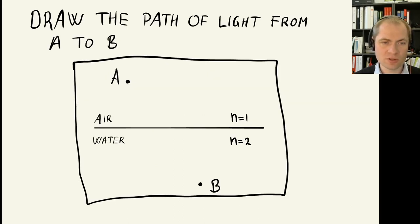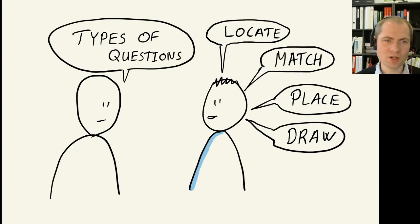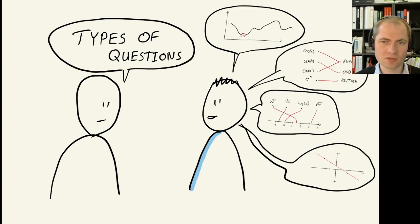One example could be this from an optics question, or a question relating to optics in physics, where I want to trace the paths of light from A to B. It should be something like this, if I were able to draw a straight line from A to an intersection point here, and then from the intersection point down to B. And because the index of refraction is lower in air than in water, then the distance in air will be a bit higher than the one in water to minimize the time travel distance from A to B. This was one example of a question where you should actually draw something. And there are a few different other types of questions. I think of them as locate, match, place and draw something here.